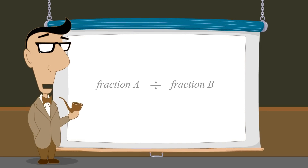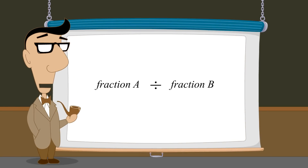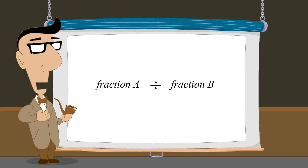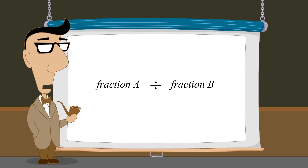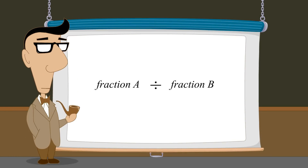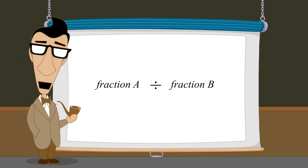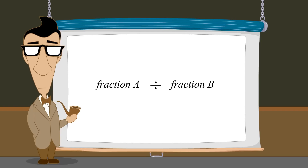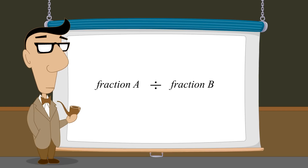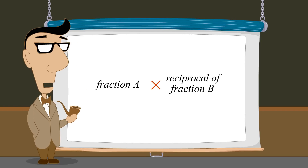The easiest way to divide with fractions is to turn the division into a multiplication. Instead of dividing fraction A by fraction B, we can multiply fraction A by the reciprocal of fraction B.